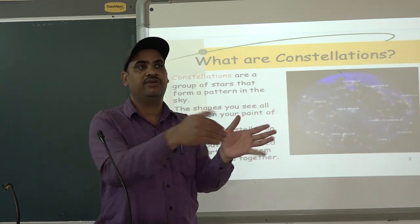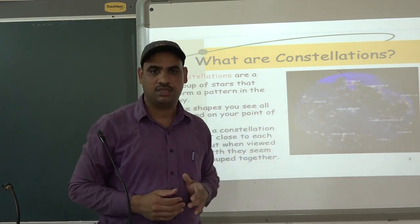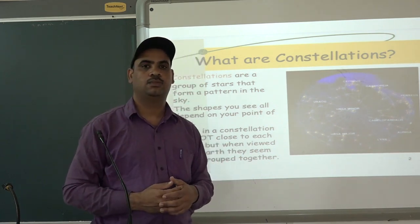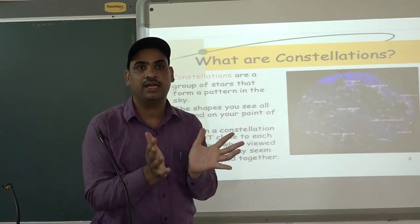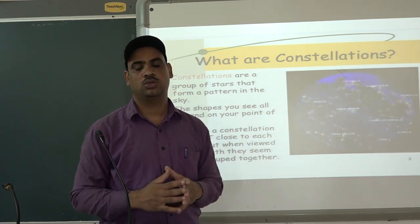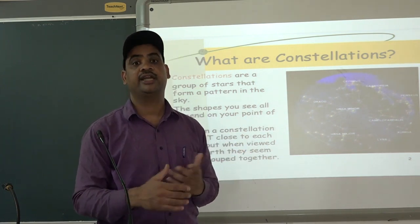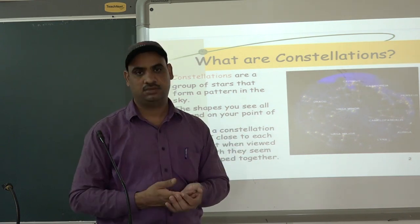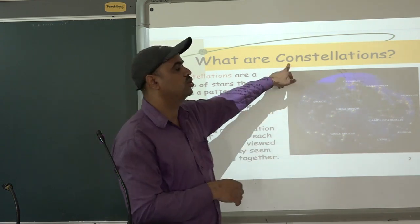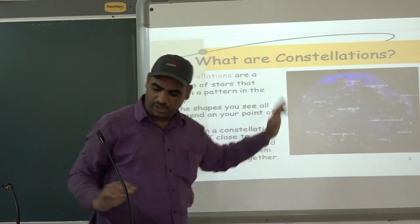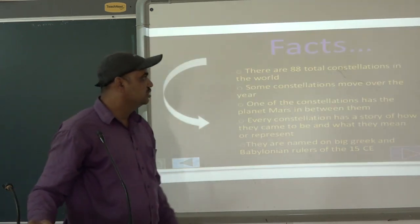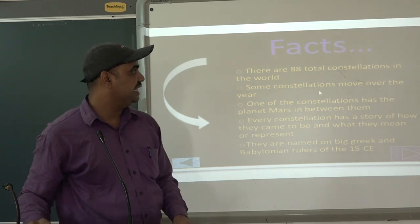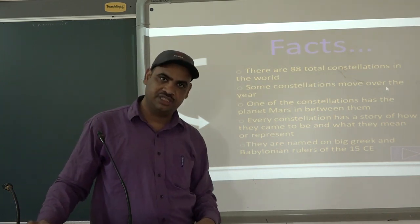Stars in a constellation are not actually close to each other, but when viewed from the Earth they seem to be grouped together. Actually, the stars are far away from each other, but when we look at them they appear close and create particular shapes and designs. These designs are called constellations. There are 88 total constellations in the universe, and they create different patterns and different shapes.